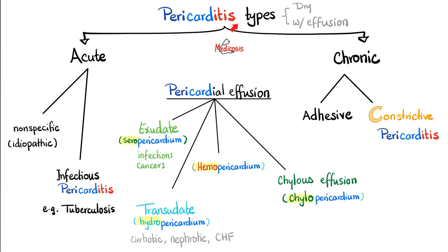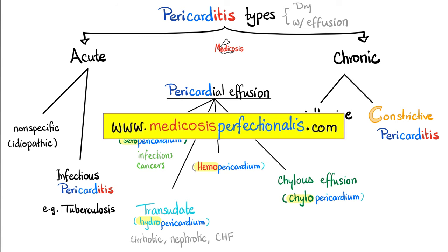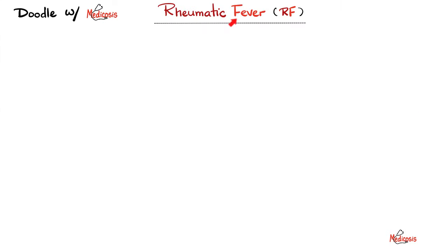What are the risk factors for developing rheumatic fever? Living in poverty, living in a crowded area, or being young — typically between five and fifteen years old — are the demographics that get acute rheumatic fever.